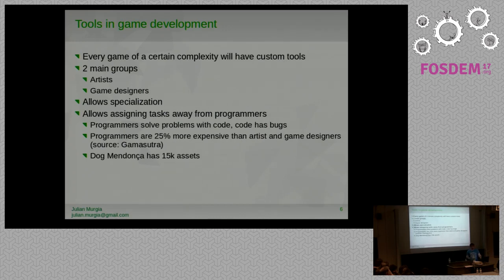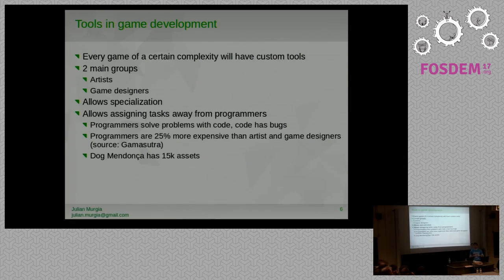Programmers solve their problems with code and code has bugs, so we want to avoid having to create code as much as possible during the game development process. Also, programmers are 25% more expensive according to Gamasutra, which means it may be interesting to avoid using them as much as possible. As an example, Dark Mendoza has 15,000 assets, which means there is a real need for artists to put their assets and creations into the game.